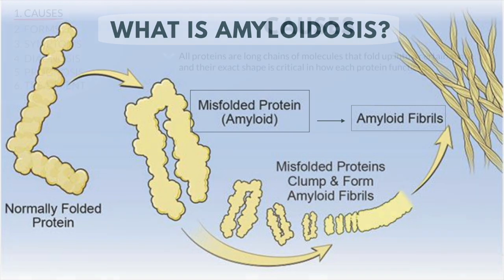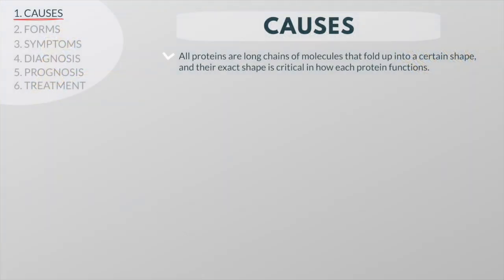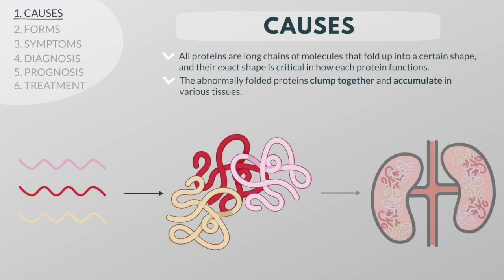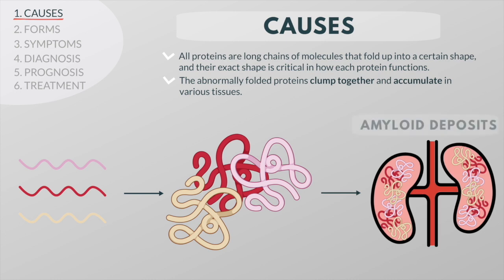All proteins in our body are long chains of molecules that fold up into a certain shape, and their exact shape is critical in how each protein functions. In amyloidosis, the abnormally folded proteins clump together and accumulate in various tissues. These accumulations are called amyloid deposits or amyloid fibrils.